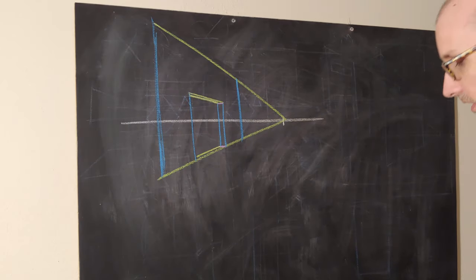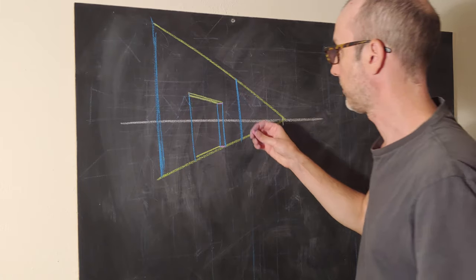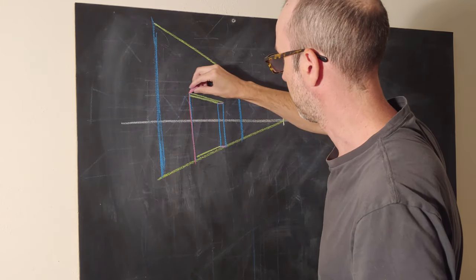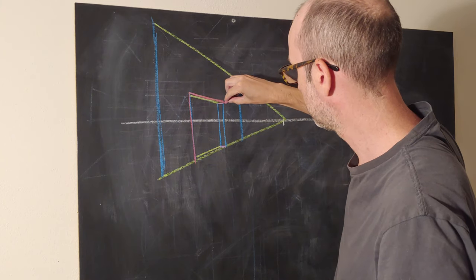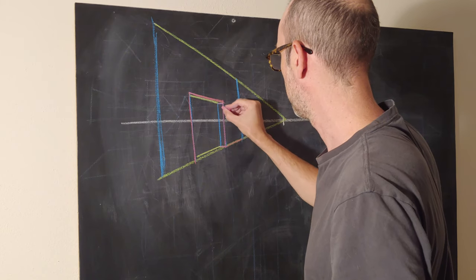So now we've created an inset door frame. So when we go back and re-emphasize this, we've got our outer bit of the building, and we've got our inset for the door.